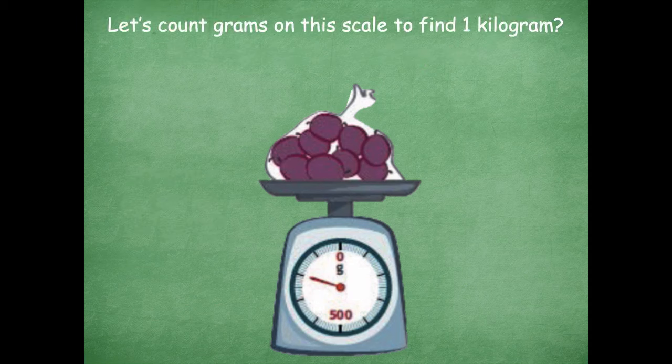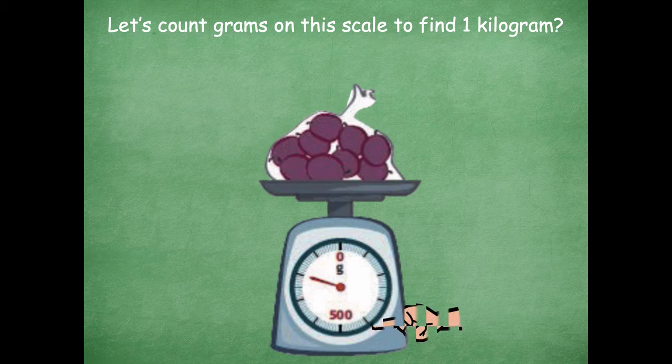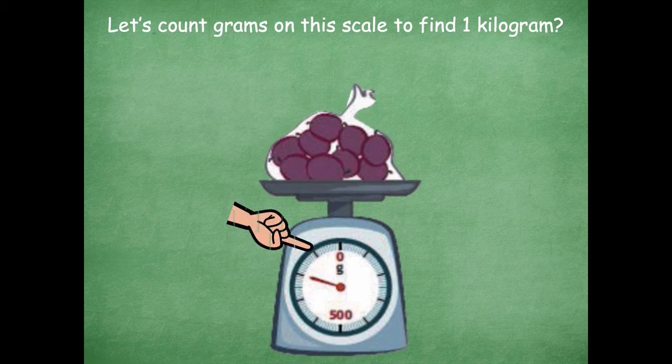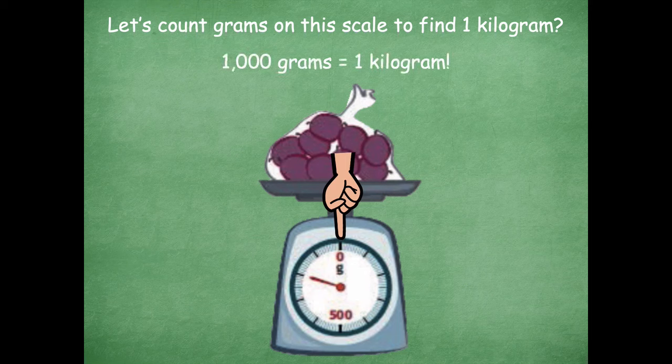Let's count the grams on this scale to find one kilogram. Let's go around and count by hundreds: 100, 200, 300, 400, 500, 600, 700, 800, 900, and then we get all the way around — that's 1000. So 1000 grams equals one kilogram. Even though this scale isn't measuring in kilograms, if that arrow pointed all the way back around to zero on top, that would be 1000 grams or one kilogram.